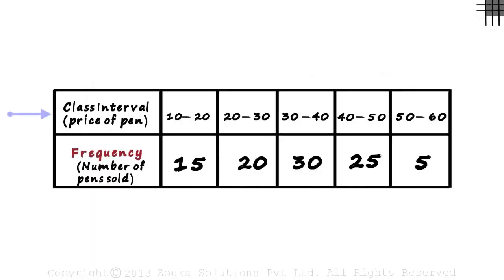In this table, we have the price range in one row and the frequency in another. 15 pens that cost between 10 and 20 rupees were sold, 20 pens that cost between 20 and 30 rupees were sold, and so on.